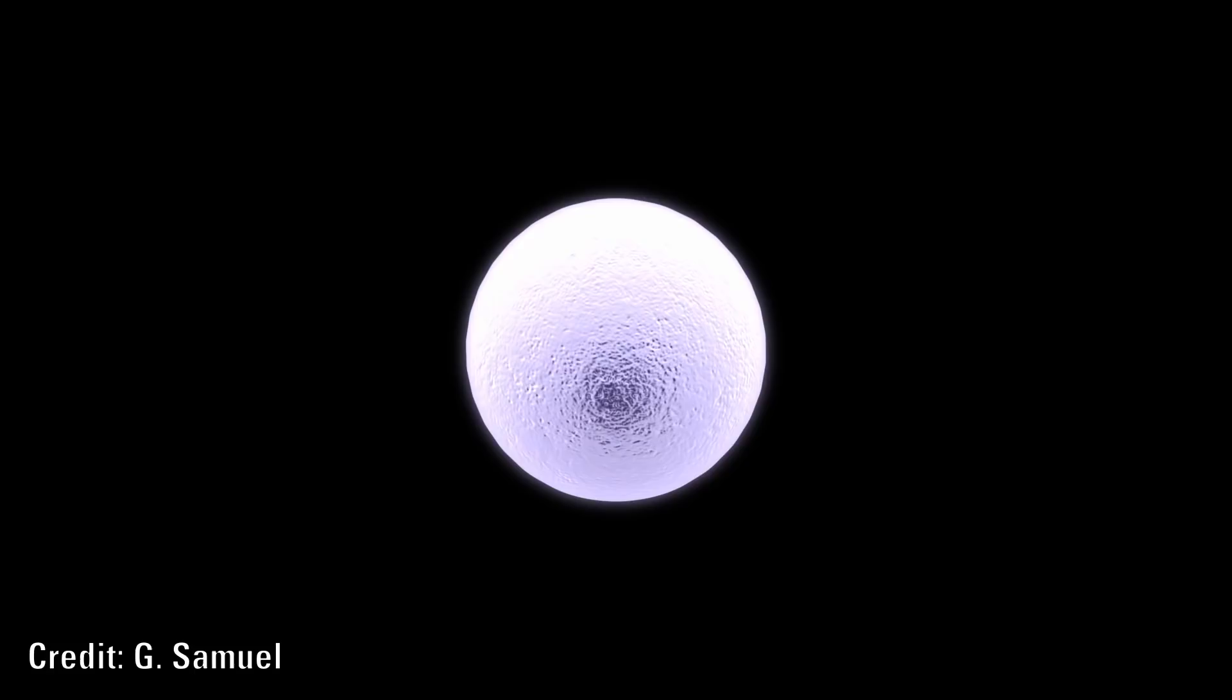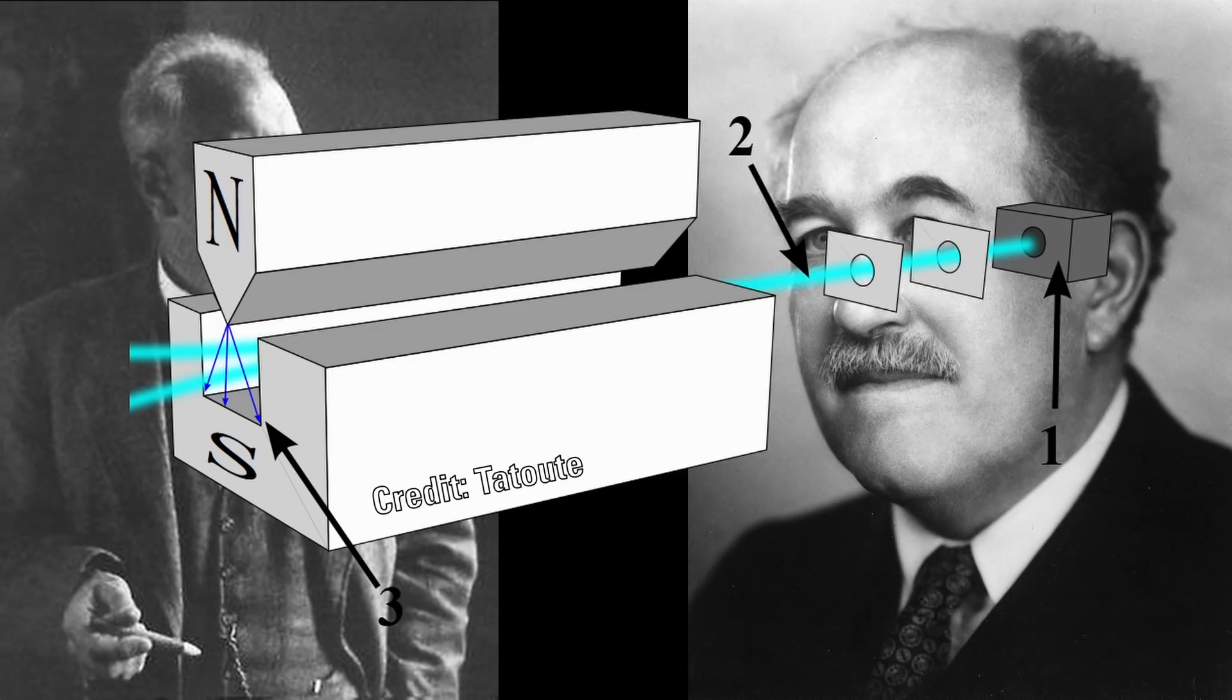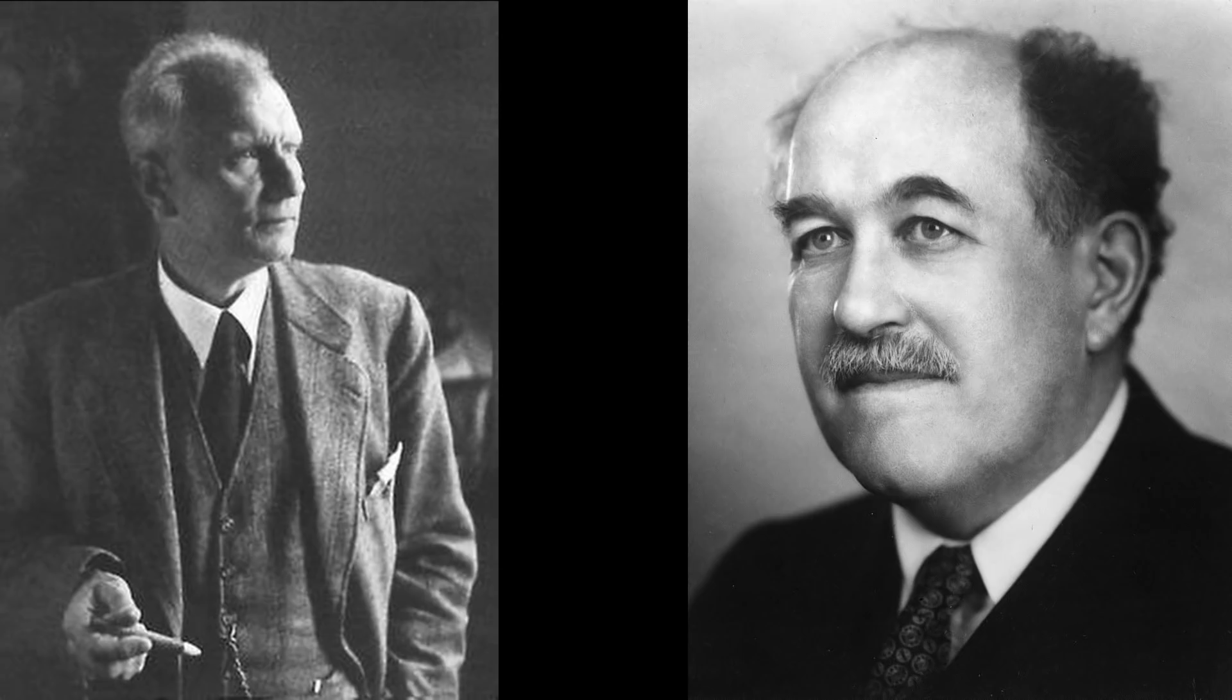The idea of spin was first discovered in the 1920s by Otto Stern and Walter Gerlach. They shot silver atoms through a varied magnetic field and saw something that they couldn't explain.